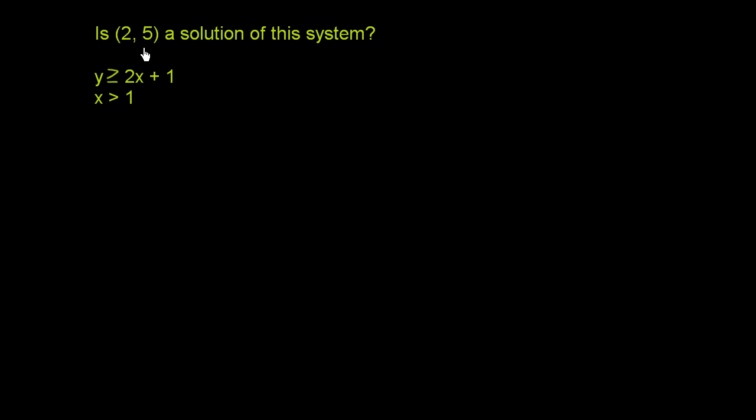In order for 2 comma 5 to be a solution of the system, it just has to satisfy both inequalities. So let's just try it out.